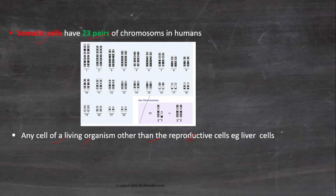So what are reproductive cells? Reproductive cells are male sperm and female egg cells.